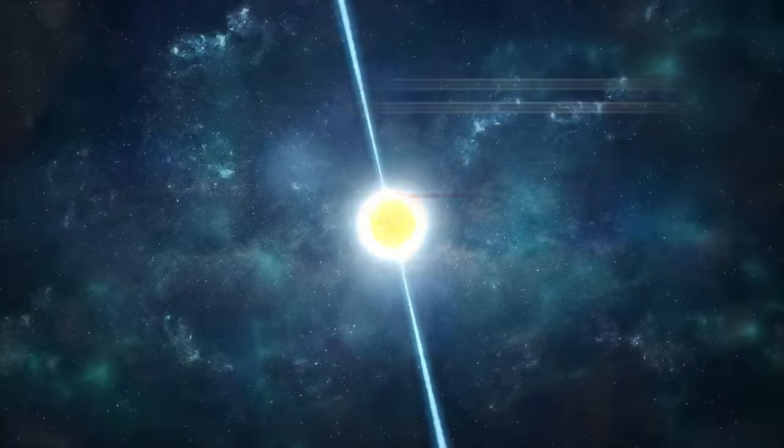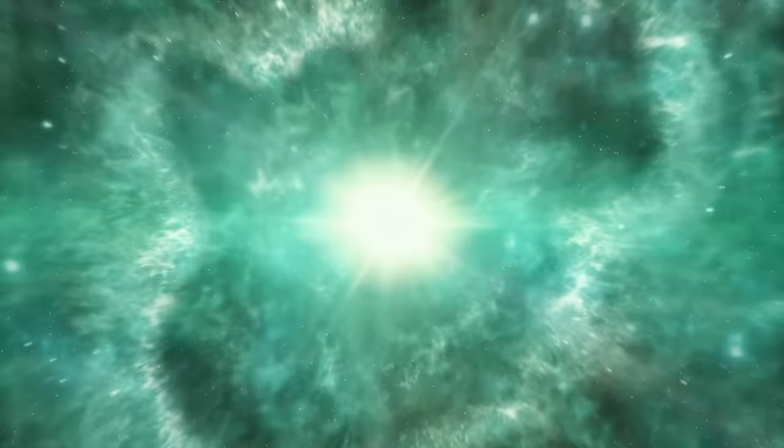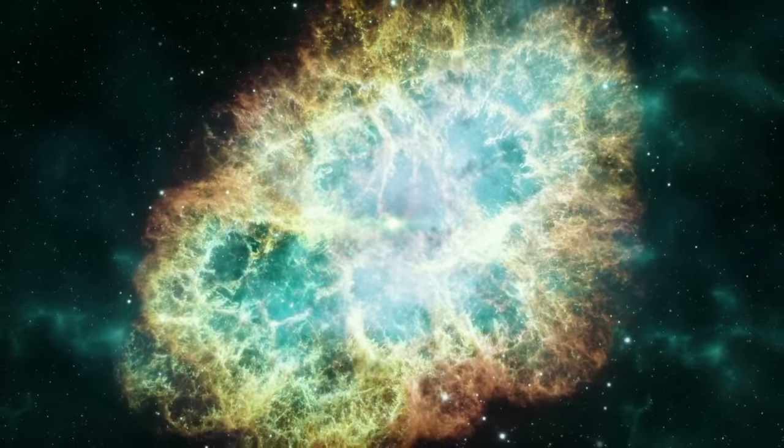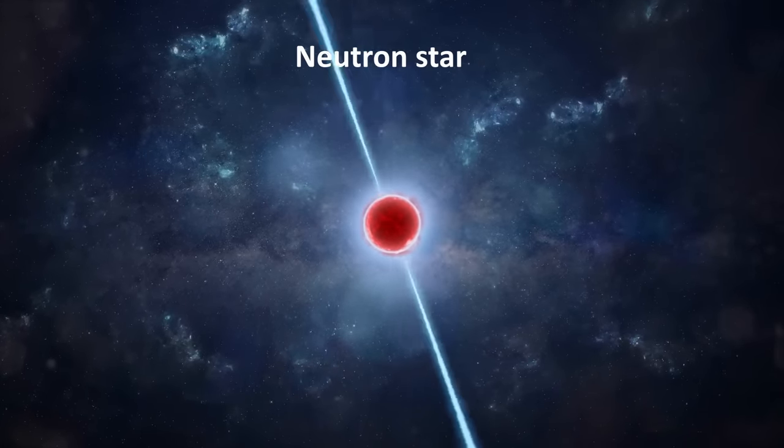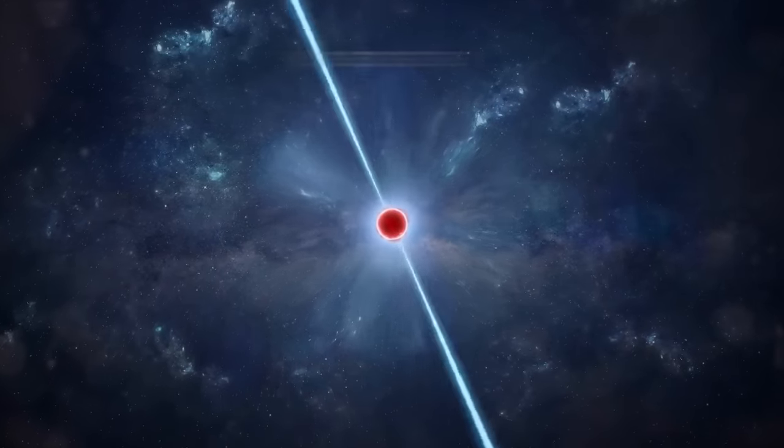For stars with leftover cores of anywhere from 1.4 to 5 times the mass of the Sun, it will collapse into a neutron star. But if the core is larger, it will collapse into a black hole.